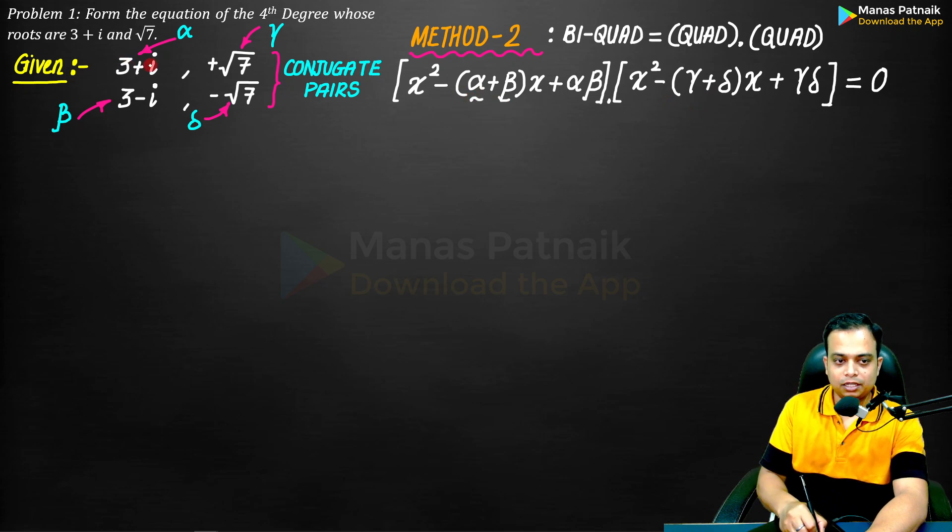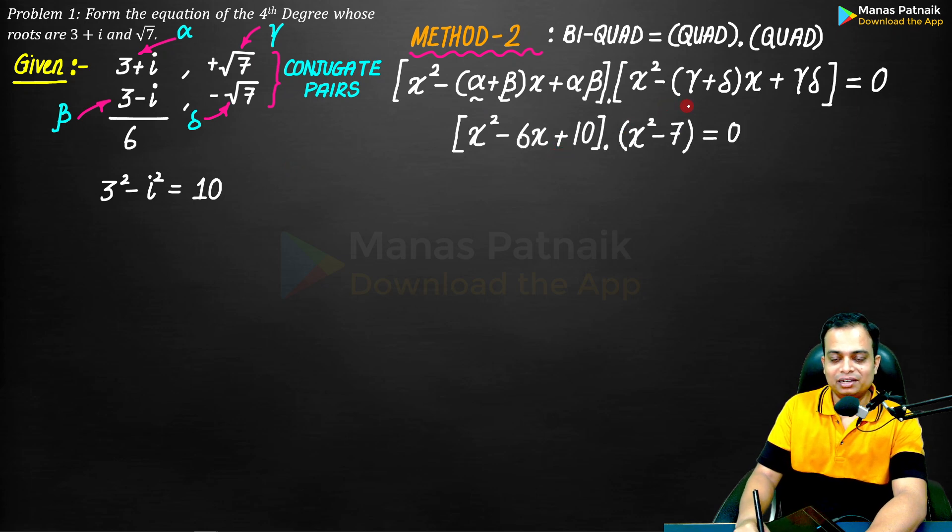Alpha plus beta: 3 plus iota, 3 minus iota - iotas will cancel, what remains is 6. What about alpha beta? So 3 plus iota into 3 minus iota will be 3 square minus iota square, which from the previous slide we know very well is equal to plus 10. So x square minus 6x plus 10 is one result.